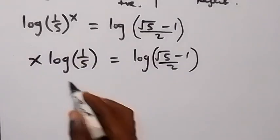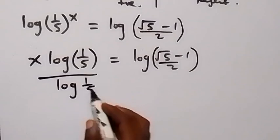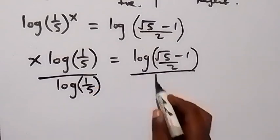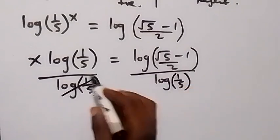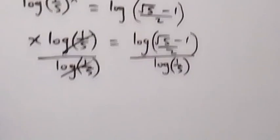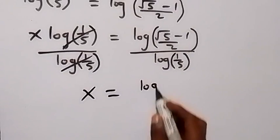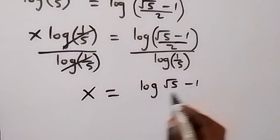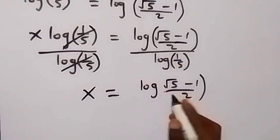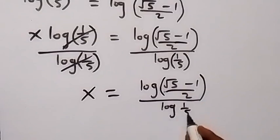We then divide both sides by log(1 over 5). The log(1 over 5) on the left cancels out, leaving x equals log of (root 5 minus 1) over 2, all divided by log(1 over 5).